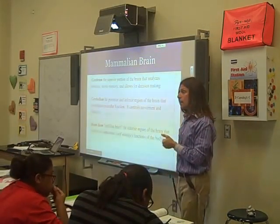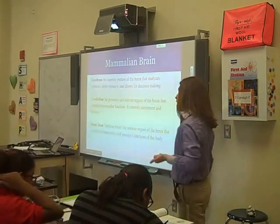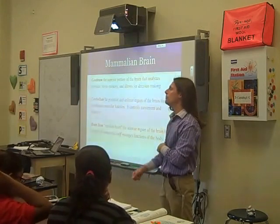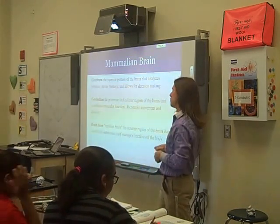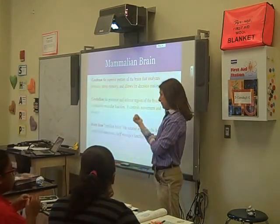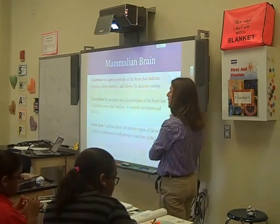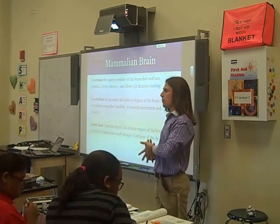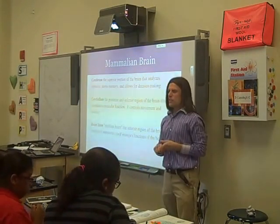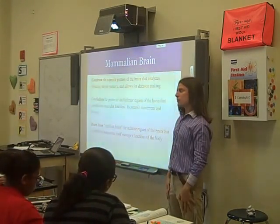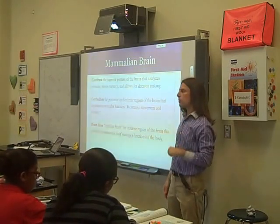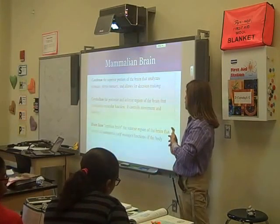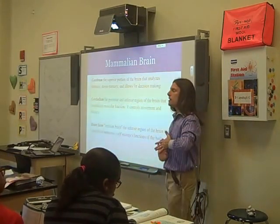All animals have a brain stem — we're going to use our red pencil for this. Write, underline, box, or star the words 'brain stem' in red. The brain stem is also known as the reptilian brain. It is a structure that all animals, from the simplest worm to the most complex whale, possess. This brain stem is in the inferior region of the brain — meaning it's at the bottom.